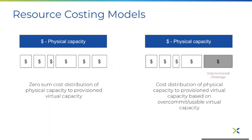Model two does cost distribution of physical capacity to provision virtual capacity based on overcommit or usable virtual capacity. This model works for IT teams who wish to charge their end-user VMs for their actual usage using a predictable rate based on the expected virtual capacity. This model is called the target virtual capacity model.